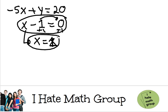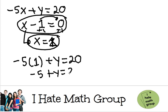Now that I know that x equals 1, I can go ahead and plug that into my other equation and look what's going to happen. Negative 5 times 1 is negative 5, plus y equals 20.